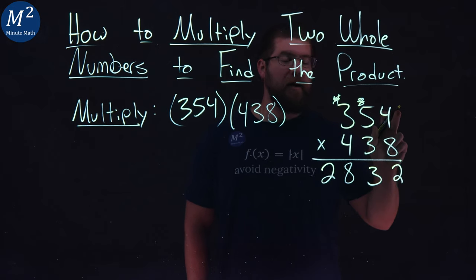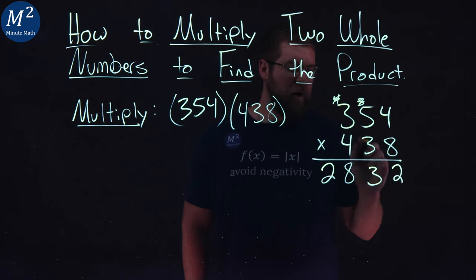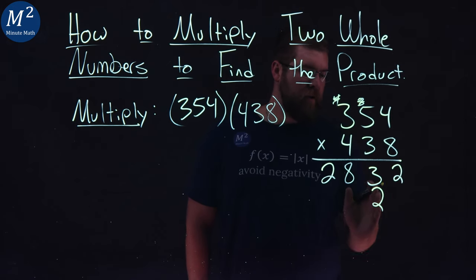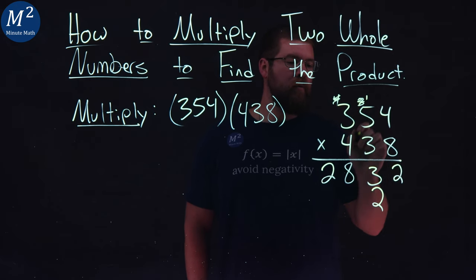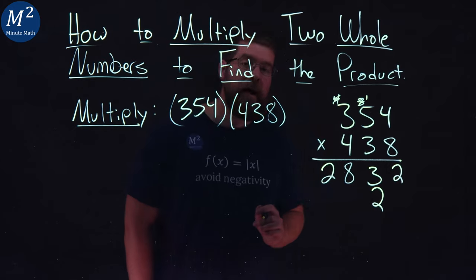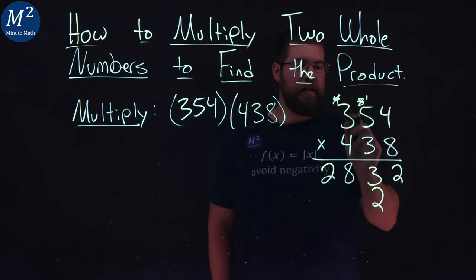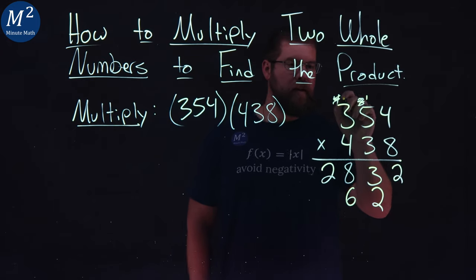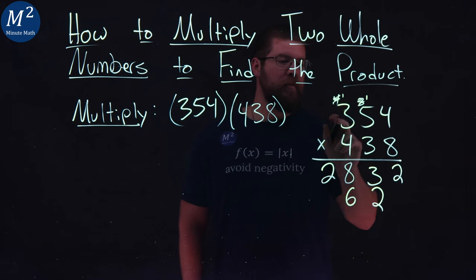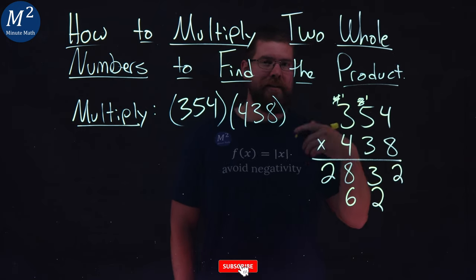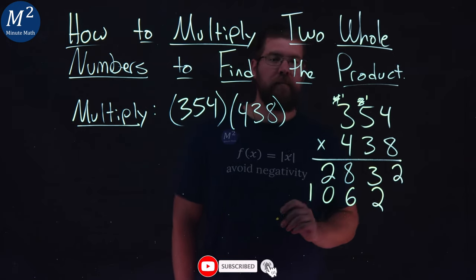3 is down here. 3 times 4 gives me 12. Put a 2 right there in that place value. Make sure we're in the tens now. So it's 12, carry the 1. 3 times 5 is 15, plus 1 is 16. Put down 6, carry the 1. 3 times 3 is 9, plus 1 is 10, right there.